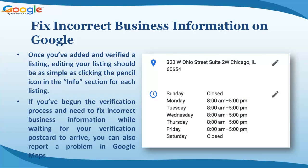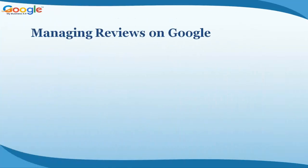Once you've added and verified a listing, editing your listing should be as simple as clicking the pencil icon in the Info section for each listing. If you've begun the verification process, you need to fix incorrect business information while waiting for your verification postcard to arrive. You can also report a problem in Google Maps.